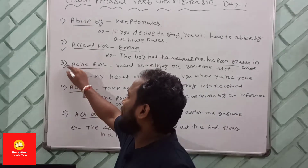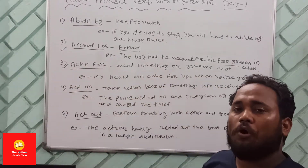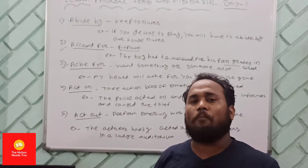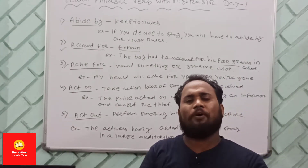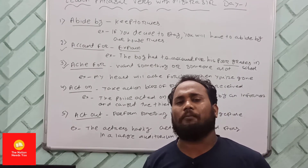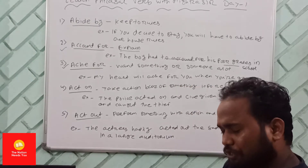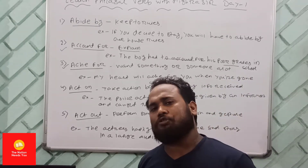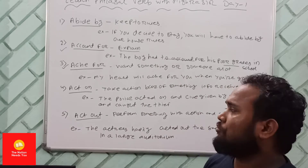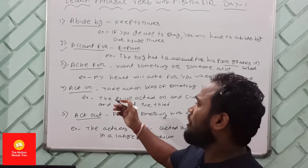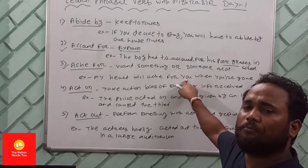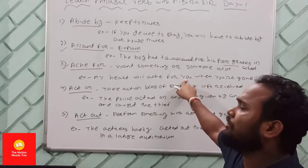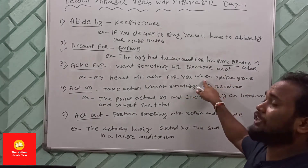Number three: 'act for,' which means to want something or someone a lot — to long for. For example: My heart will act for you when you are gone.